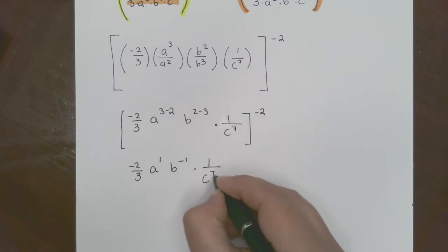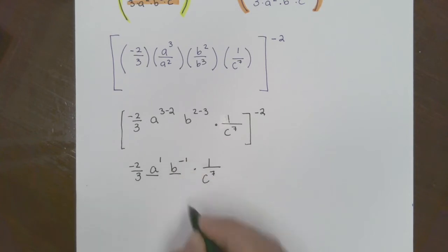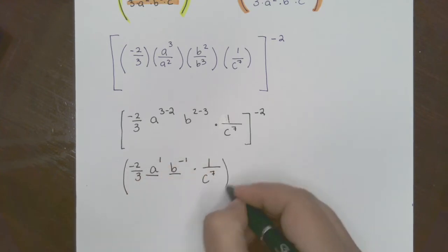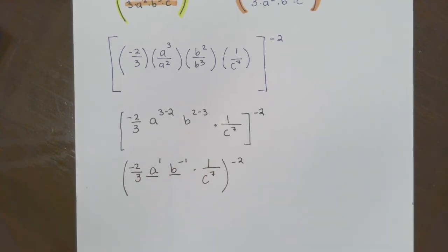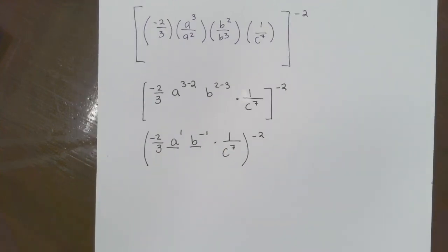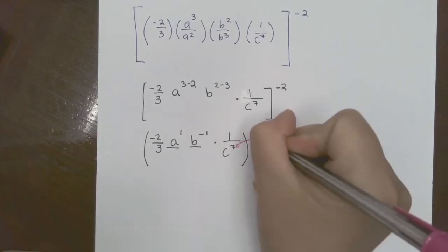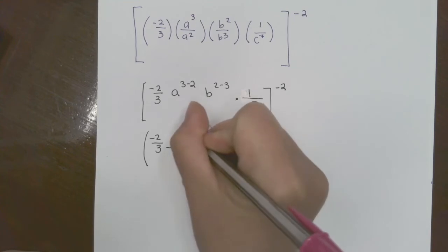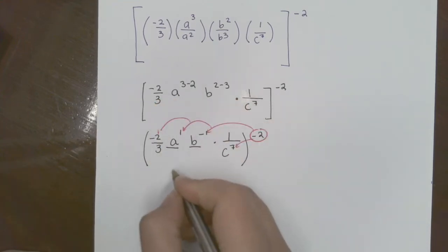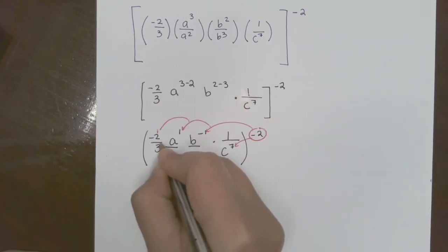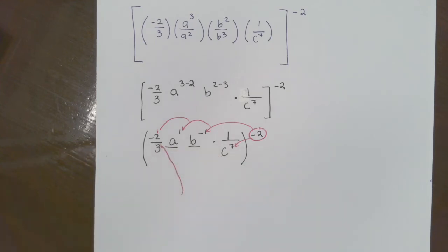Absolutely. So we got three minus two, two minus three, and we got nothing because c to the... we got nothing, so I'm just going to keep it down at the bottom. All of this is still raised to the exponent of negative two.